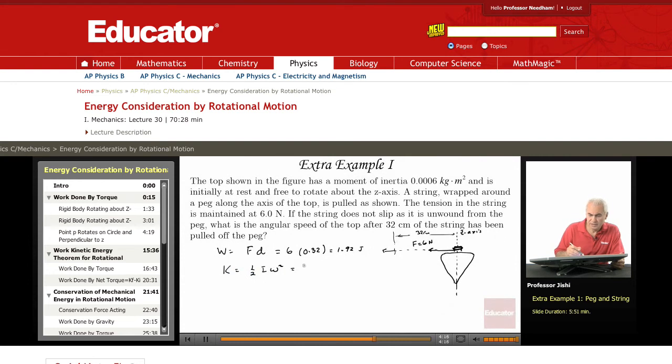Which is ½ times—this is 6×10⁻⁴—times ω². So those must be the same: the work done appears as kinetic energy.